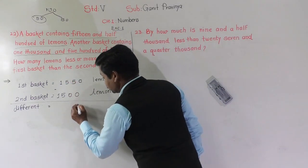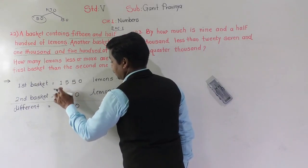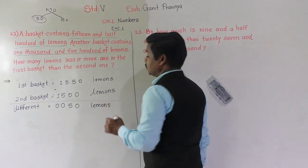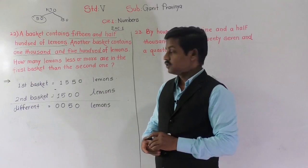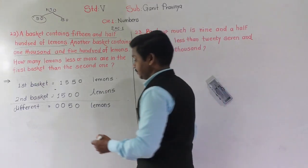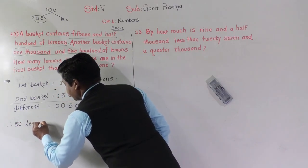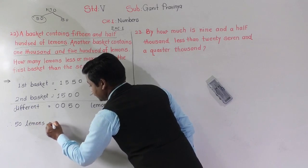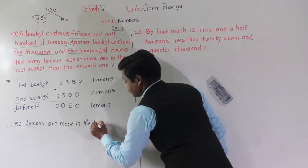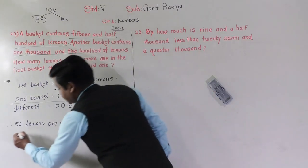So let us find the difference: 0 minus 0 is 0; 5 minus 0 is 5; 5 minus 5 is 0; and 1 minus 1 is 0. So the difference between the lemons in the two baskets is 50. That means in the first basket, 50 lemons are more than the second basket. Conclusion: 50 lemons are more in the first basket than the second basket.